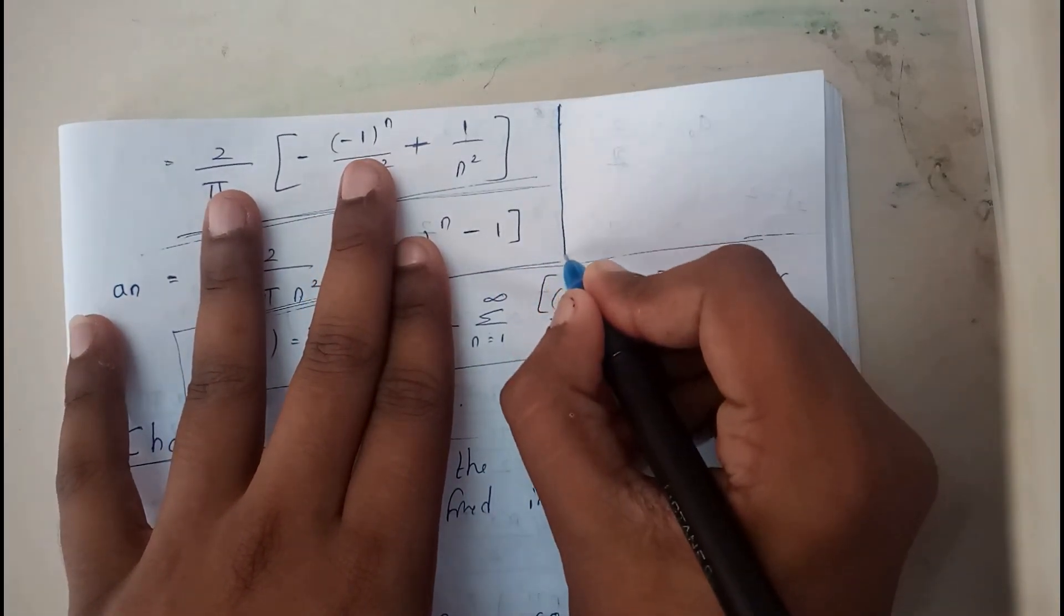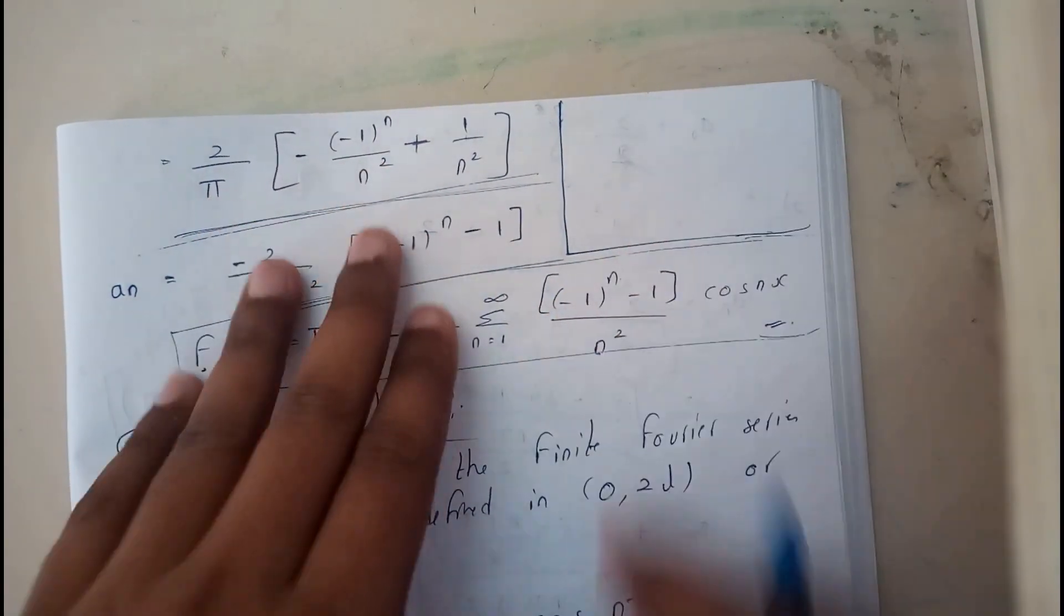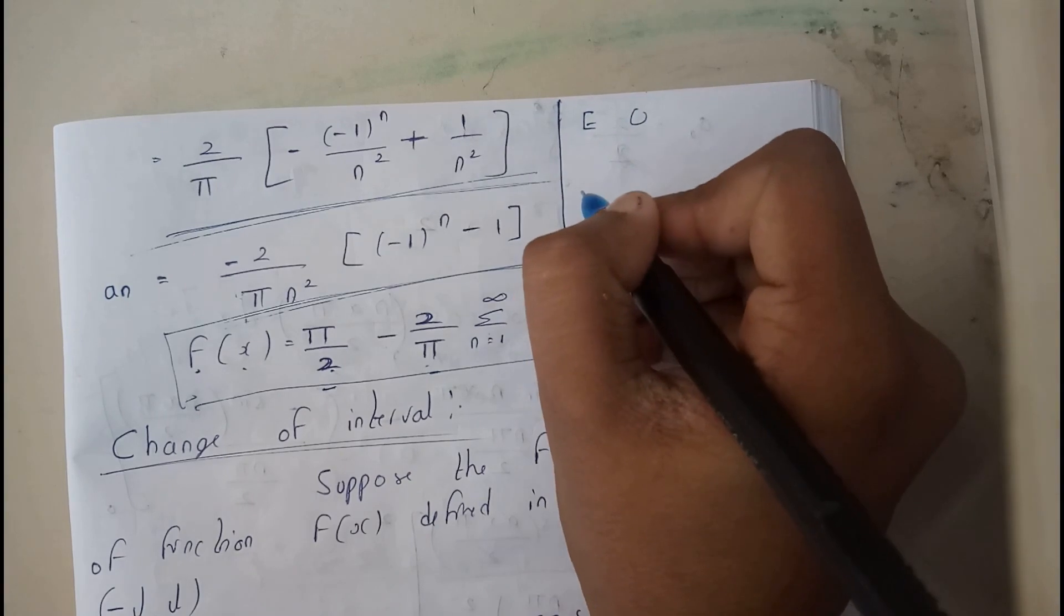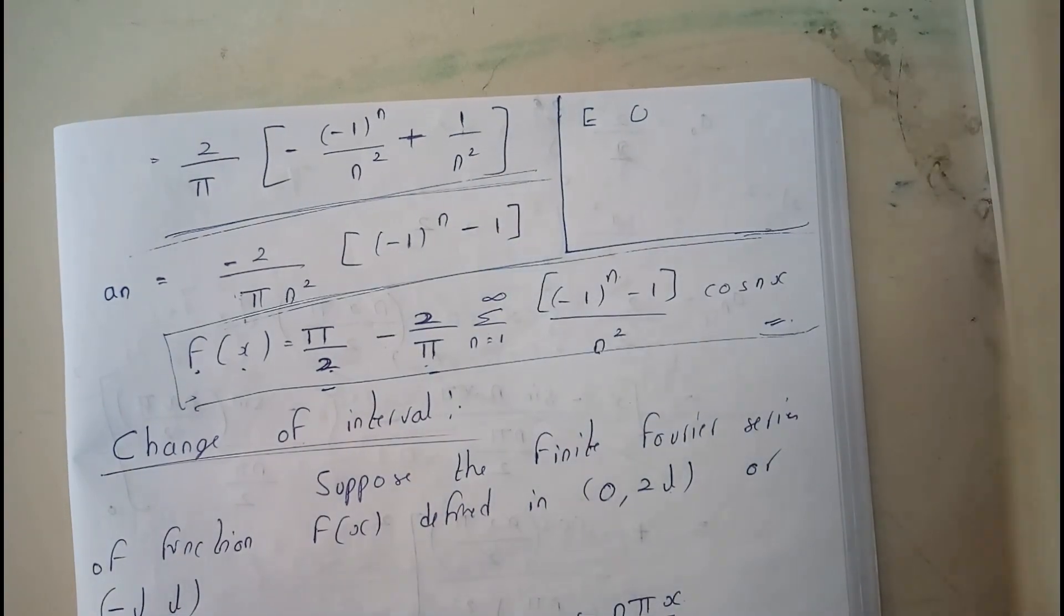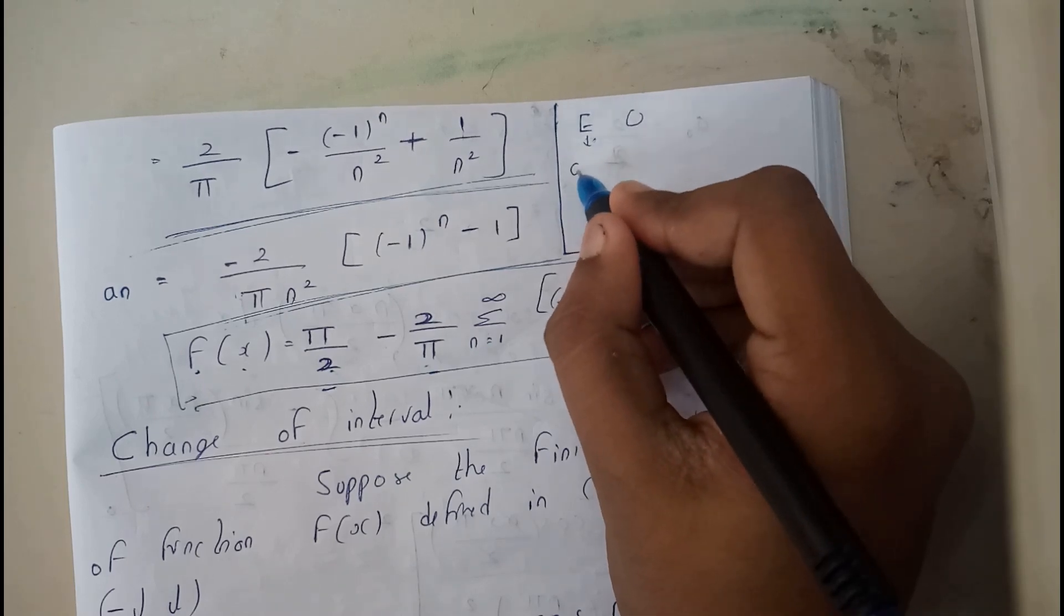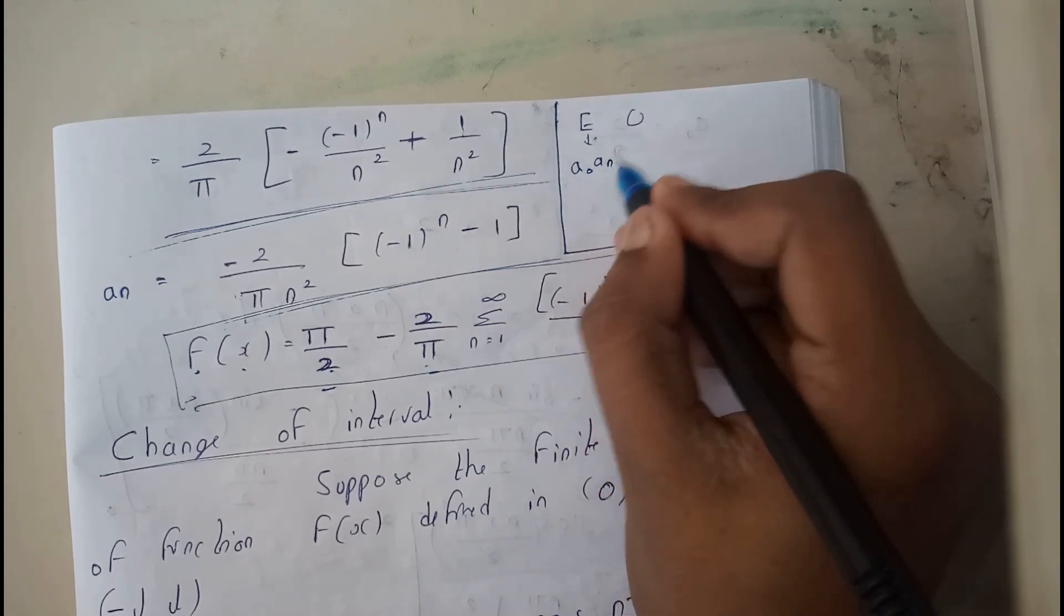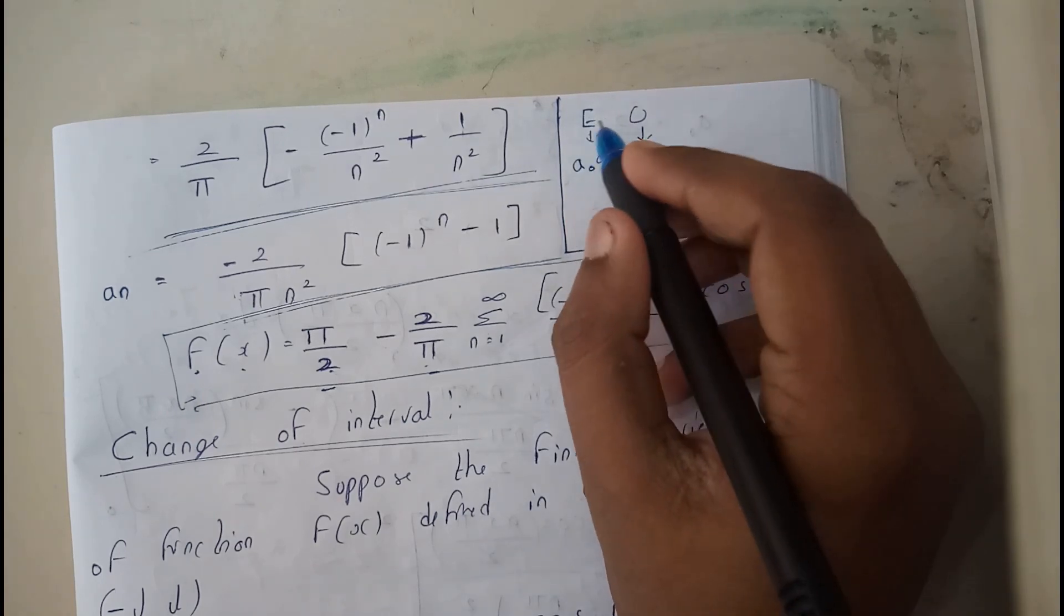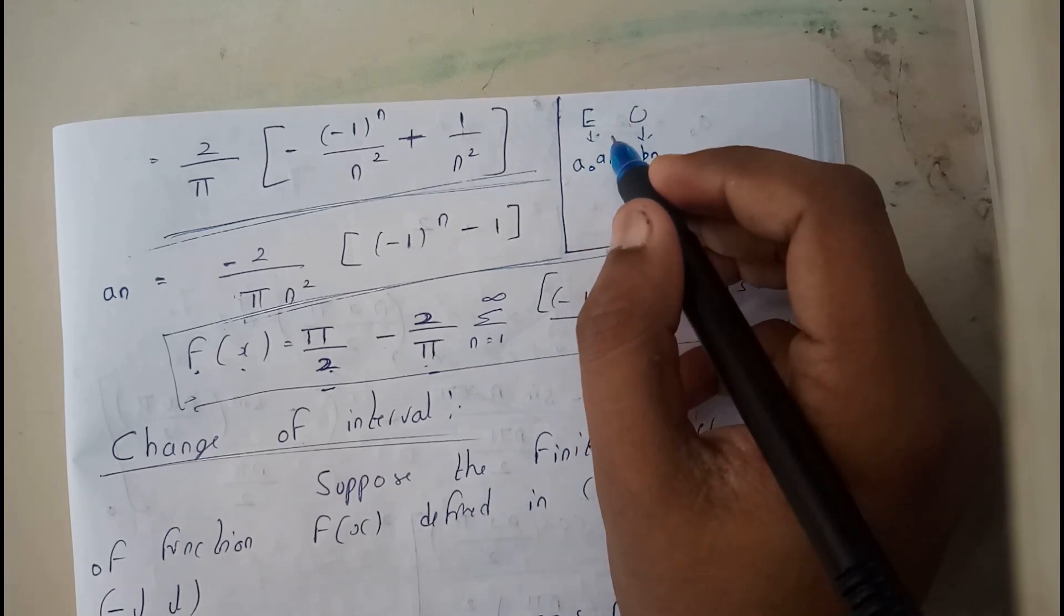If there is a question where you are unable to find whether it is an even function or an odd function, if you are not able to identify it - in even function we will be finding a₀ and aₙ, in odd function we will be finding bₙ - so we need to know whether it is an even function or an odd function.